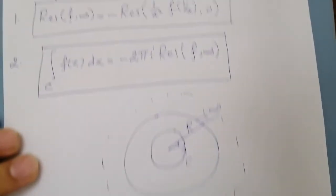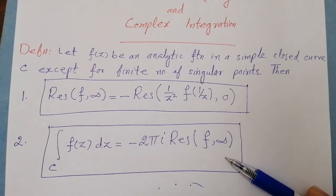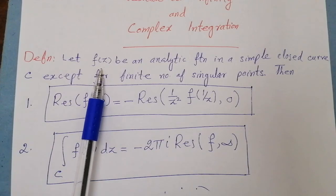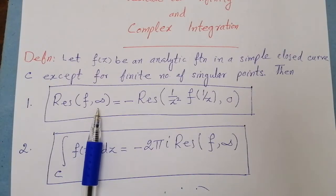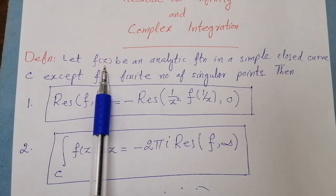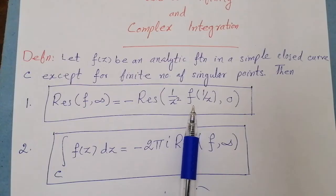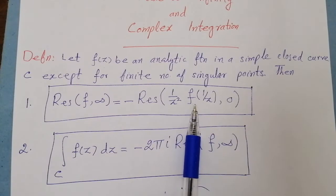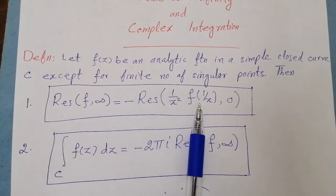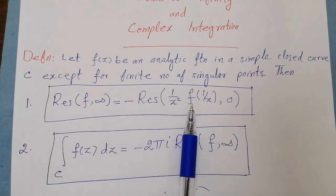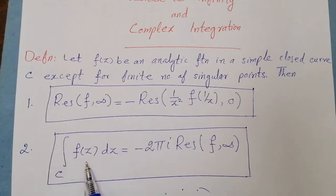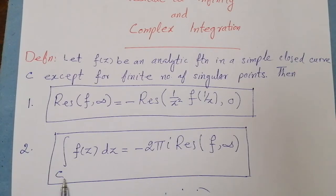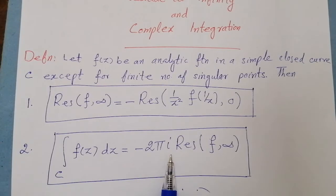We have to concentrate on these two results. If we are given a function f(z) and we need to obtain its residue at infinity, first we replace z by 1/z to obtain f(1/z), then multiply f(1/z) by 1/z². We then find the residue of that expression at z = 0 using usual methods. For the integration of f along a positively oriented circle c, it equals minus 2πi times the residue of f at infinity.